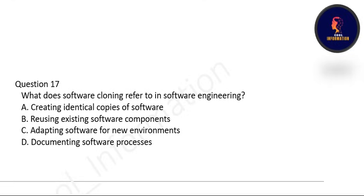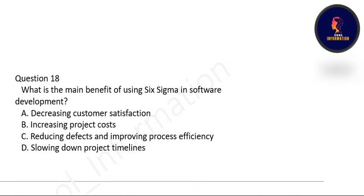Question 17: what does software cloning refer to in software engineering? Software cloning means creating identical copies of software — option A is correct. Next: what is the main benefit of using Six Sigma in software development? It reduces defects and improves process efficiency — option C is correct.